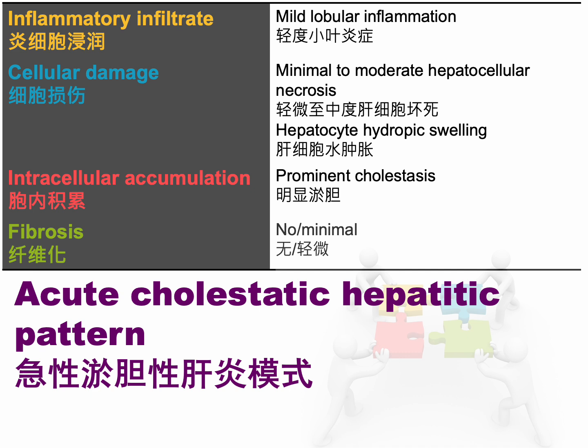The second pattern of cholestatic injury is known as the acute cholestatic hepatitic pattern. It is distinguished by prominent lobular cholestasis with moderate necroinflammatory activity at most, and no fibrosis. In comparison to the acute hepatitic pattern, this pattern shows more pronounced cholestasis but significantly less necroinflammatory activity. Additionally, bridging and panacinar necrosis are rarely observed in the acute cholestatic hepatitic pattern.